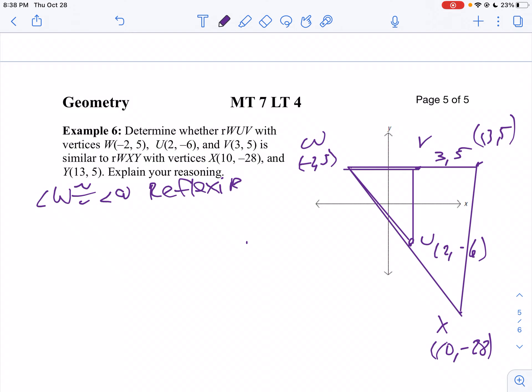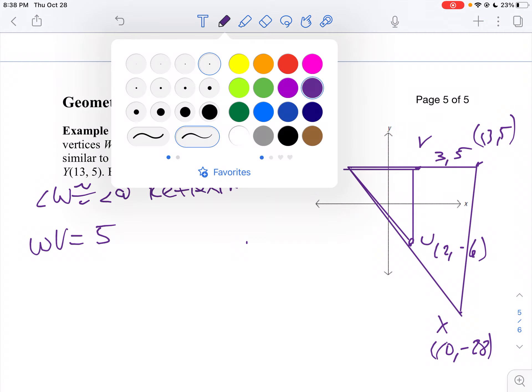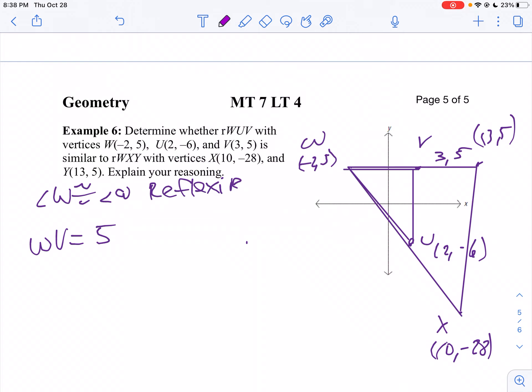So now, let's take a look at the distance from W to V. Well, that's a nice horizontal line. I'm going from 3 to negative 2. So W to V is 5. And then I want to compare that in my big triangle to the side that corresponds with it.